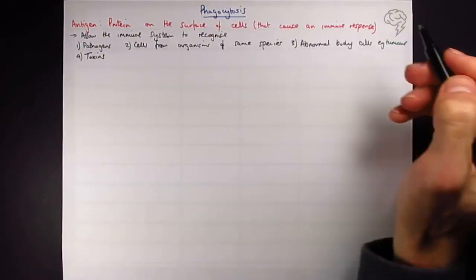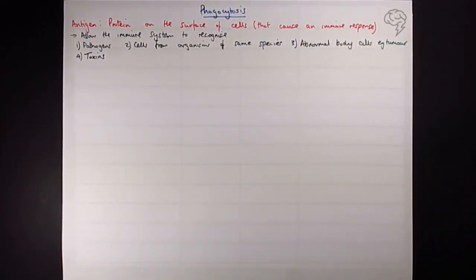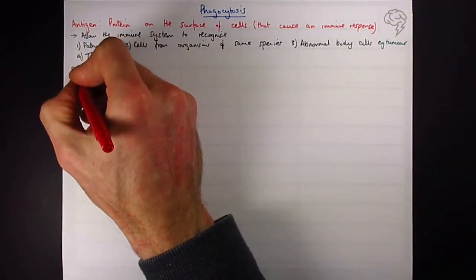These kind of go together because they're both part of the immune response. Quick definition: what is a pathogen? A pathogen is an organism that causes disease.